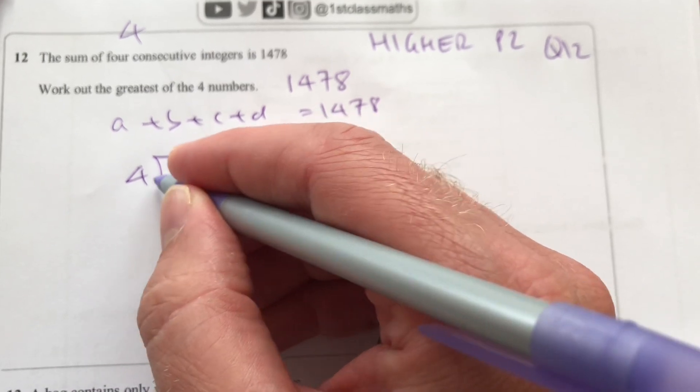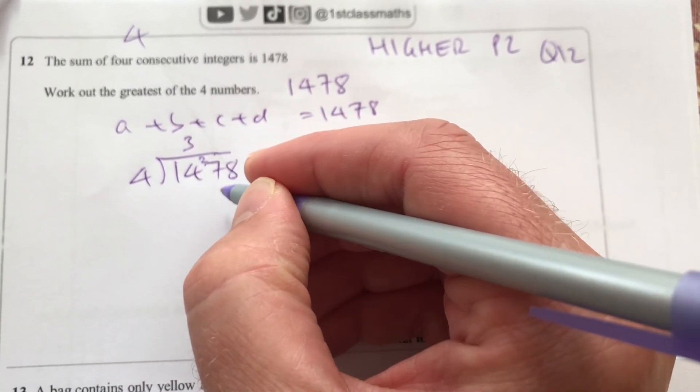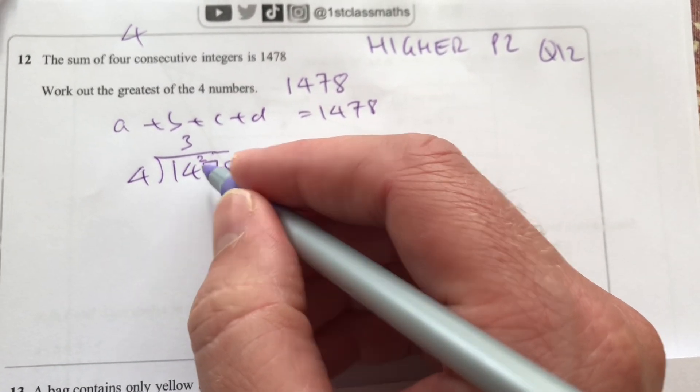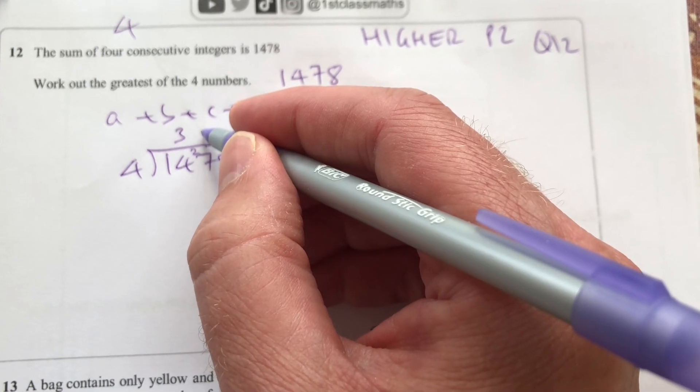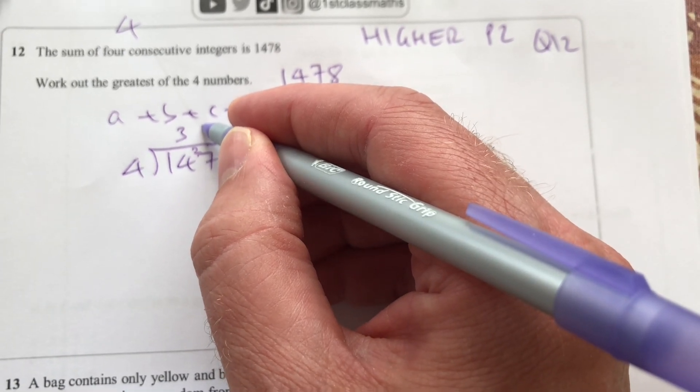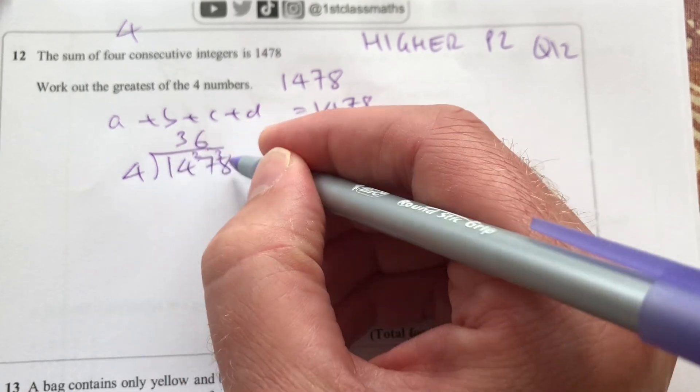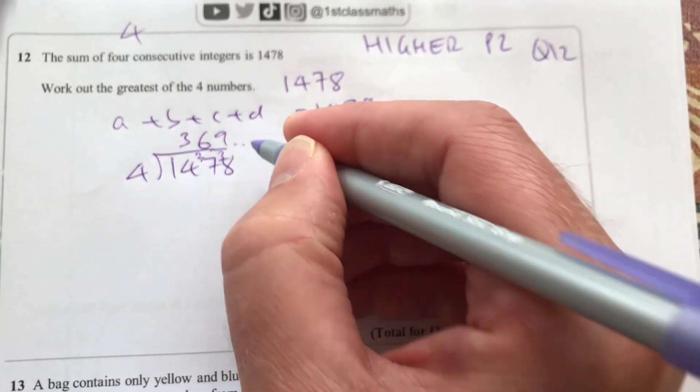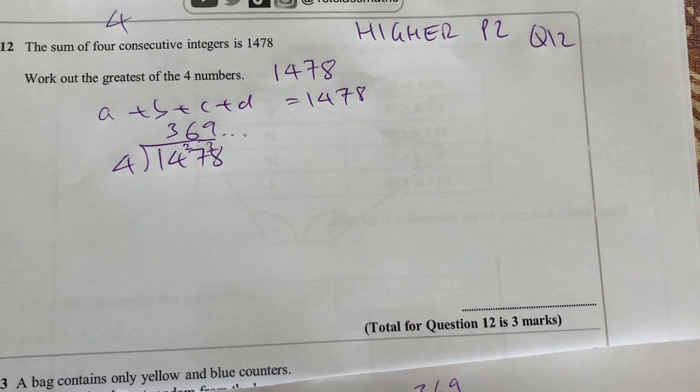So divide 14 by 4, it's 3 remainder 2. 27 divided by 4 is 6 remainder 3. That's going to be 9 of the bits. So somewhere around 369.